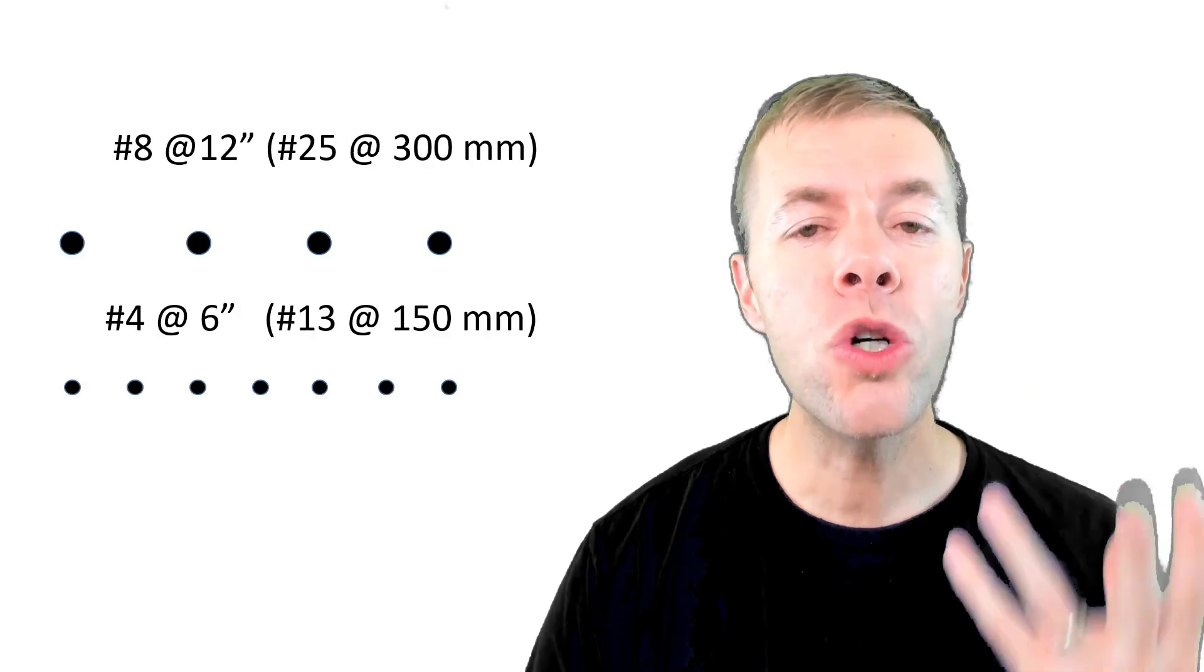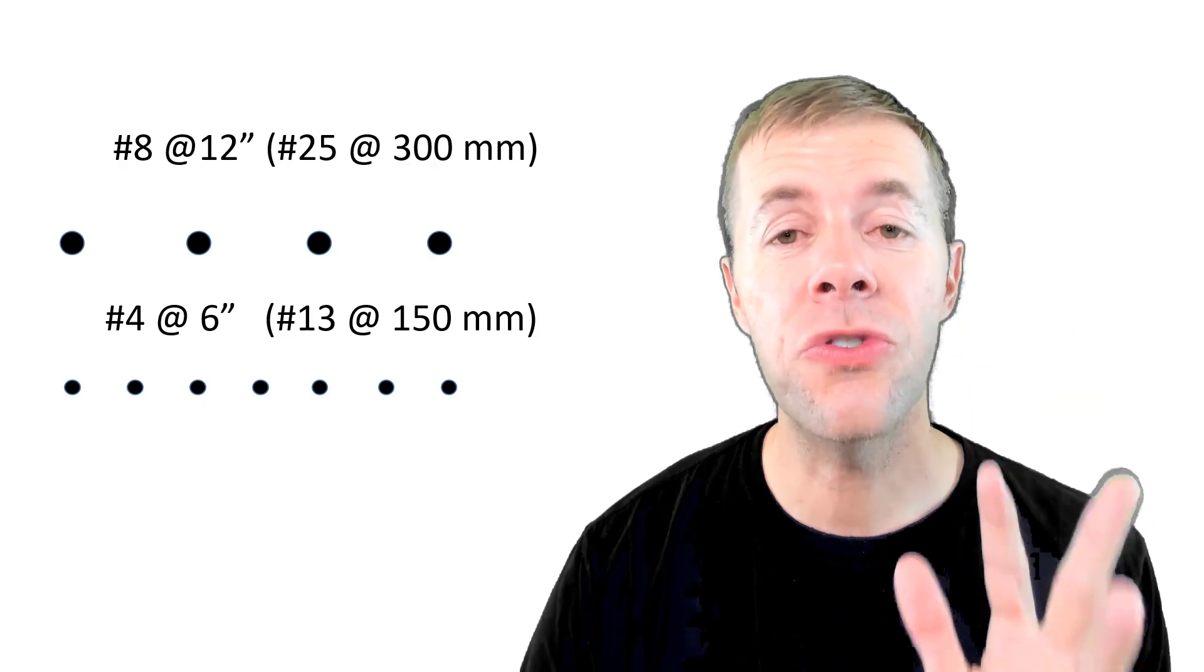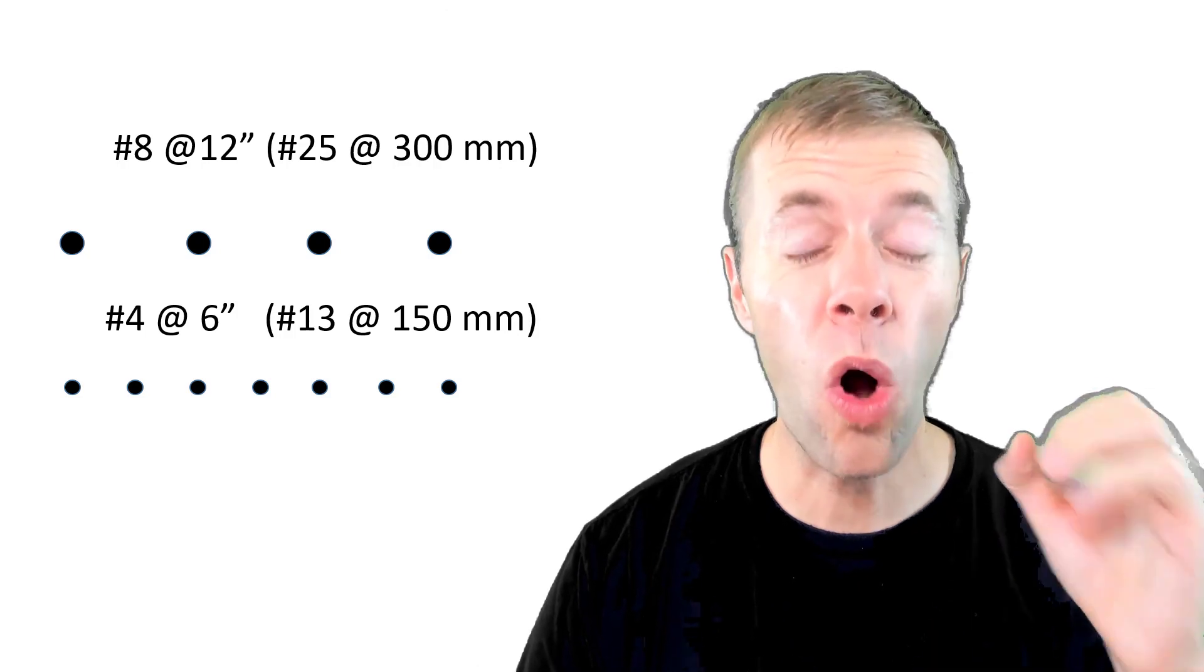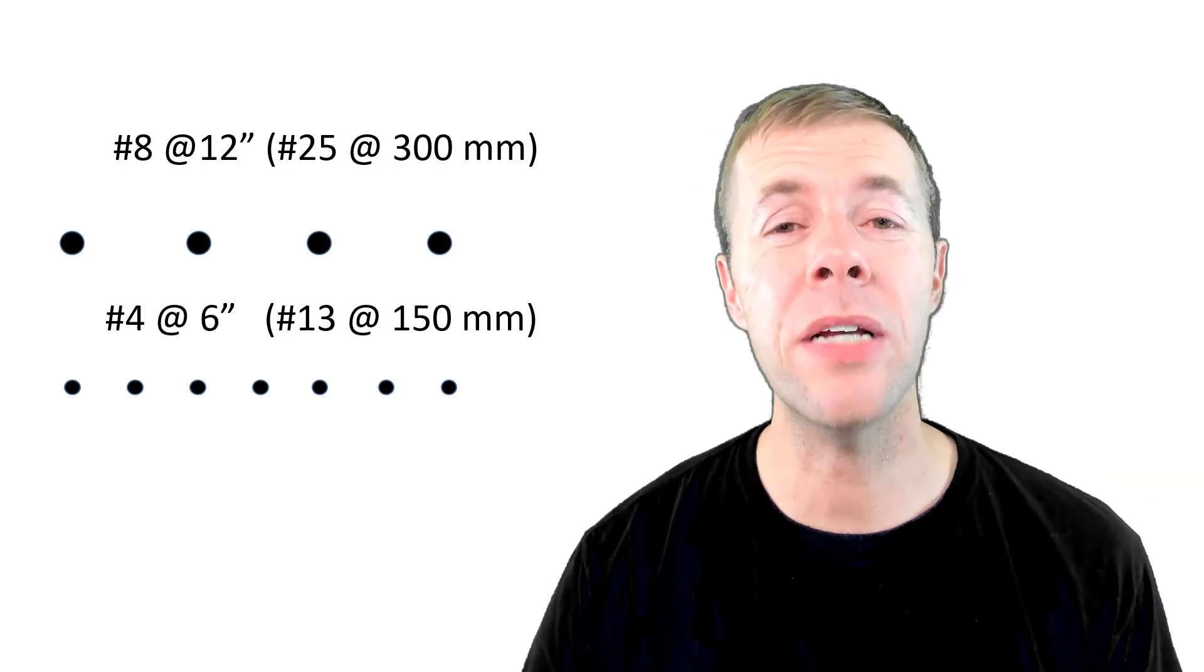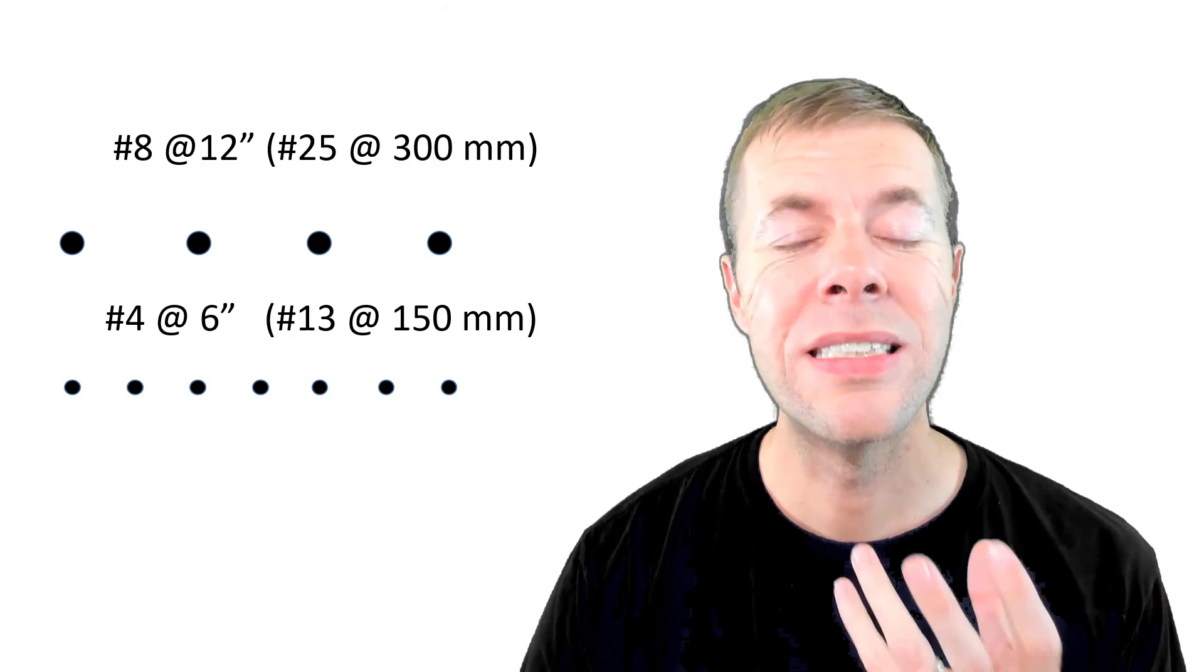Let me show what I'm talking about. We've got two rebar spacings. Both of them provide the same area per width, but the one on the top is larger bars, larger spacing and the smaller one, smaller bars, tighter spacing.